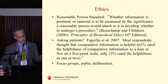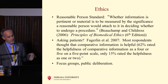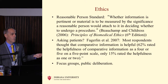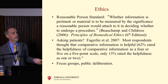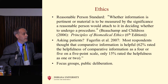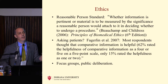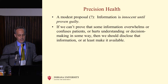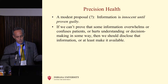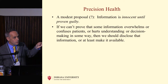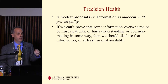Ethics might help here. Whether information is pertinent or material is measured by the significance a reasonable person would attach to it in deciding the procedure in front of them. We actually know from the Fagerlin paper that they did ask whether patients found the information pertinent, and patients said yes — they liked having that information, they liked knowing they were above average risk. So if you go the ethics way, it looks like you should probably let them have it. My modest proposal: information is innocent until proven guilty. If we can't prove that some information overwhelms or confuses patients or hurts their decision-making, the burden is on you — show not just that it's not relevant to expected utility maximization, but that it actually hurts the efficient pursuit of utility. If you can't show a problem, make it available.